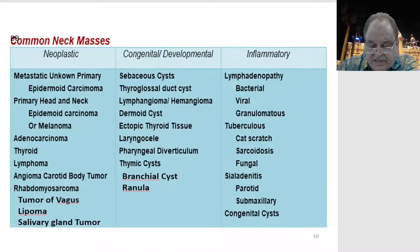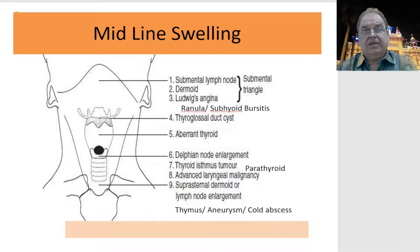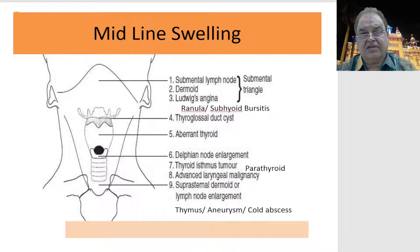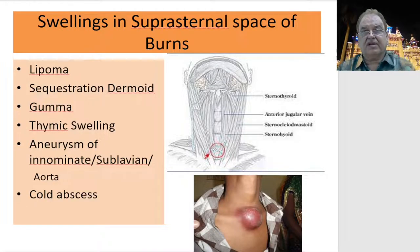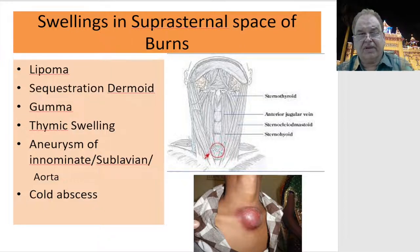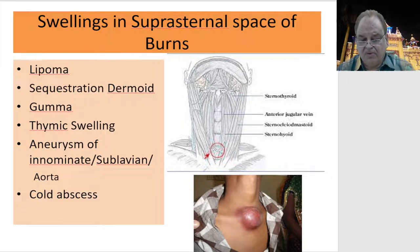In the midline, starting from the floor of the mouth, there can be lymphoid tissue, dermoid, Ludwig's angina, thyroglossal cyst, aberrant thyroid, and thyroid masses. In the suprasternal space of Burns, there can be a lipoma, dermoid, hygroma, thymus, aneurysm from the innominate or subclavian or even the aorta presenting in the suprasternal space, or a cold abscess.